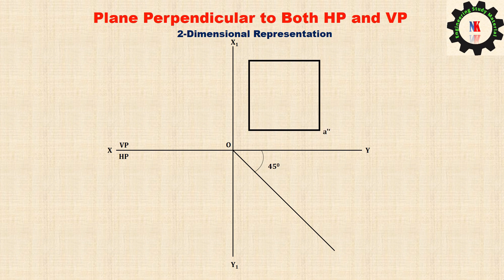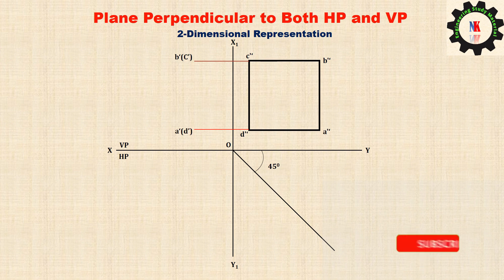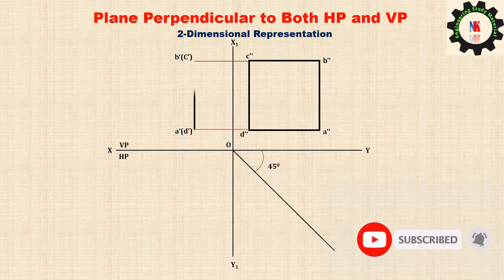Name the corners: a double dash, b double dash, c double dash, d double dash. To obtain the front view, draw the horizontal projectors from the side view. Join the corners to obtain the front view.